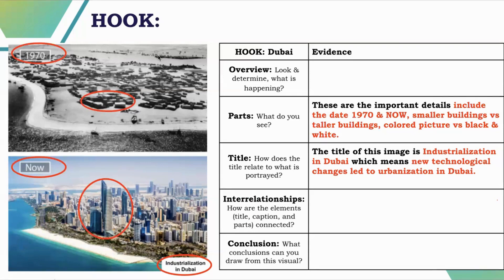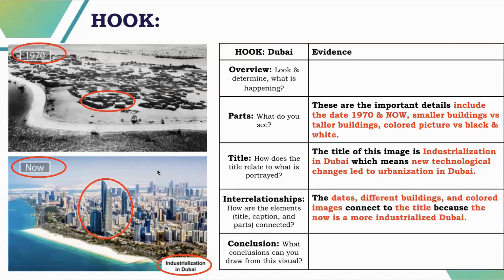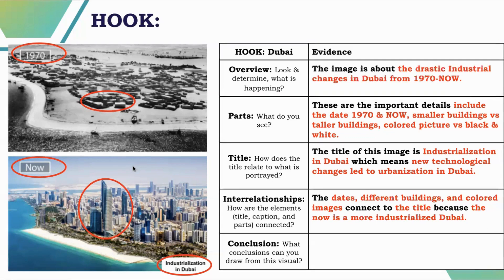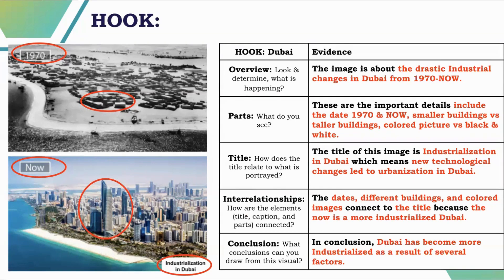Based on these different parts — the dates, different buildings, the color, and the title — the connections tell me that Dubai develops into a more industrialized, urbanized city. In the 1970s it looked quite rural. The overview: this image is about the drastic industrial changes in Dubai from 1970 to now. And the conclusion: Dubai has become more industrialized as a result of several factors.